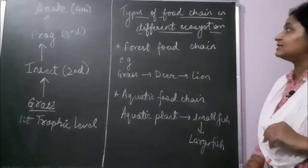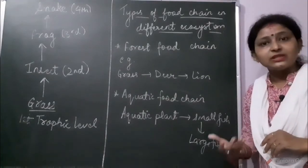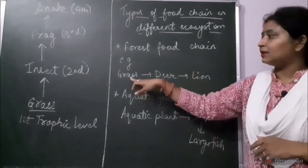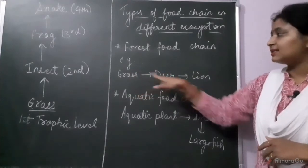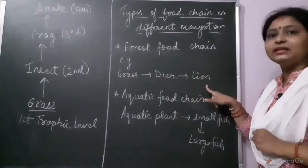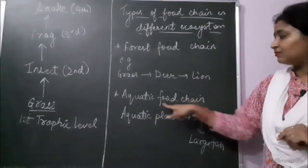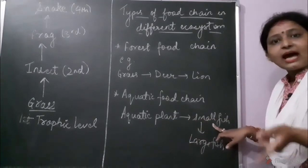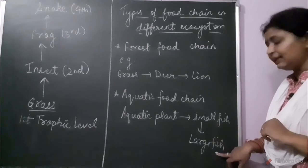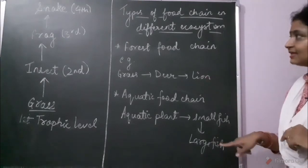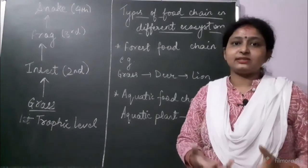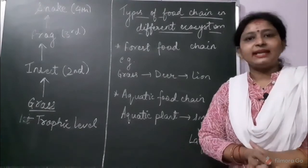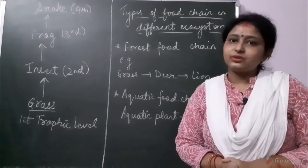Let's see some examples of food chains in different ecosystems. In a forest food chain, grass is eaten by deer, and deer in turn is eaten by lion. In an aquatic food chain, aquatic plants are eaten up by small fishes, and small fishes are eaten up by large fishes. These are examples of food chains in different ecosystems. In the next class we will study about food web. Thank you.